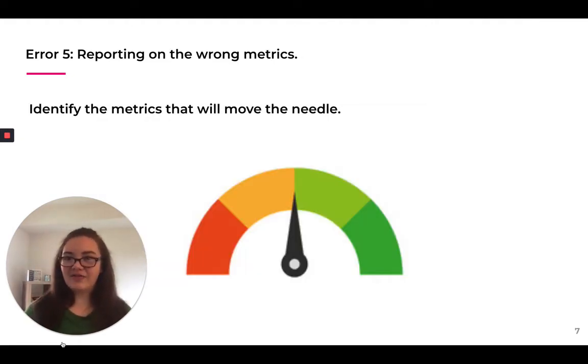And then error number five, if you're reporting consistently, we want to make sure that we're reporting consistently on the right metrics. Once again, identifying those that are really moving the needle and a measurement plan will help with that. If we're reporting on the wrong metrics, we could very easily go astray by that. So making sure that we take a step back before we analyze anything and understanding what metrics we really need to be tracking in order to pair our KPIs with our core business objectives.